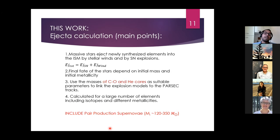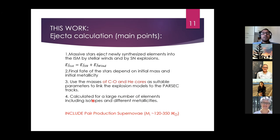I will give a broad overview of how we compute the ejecta. The total ejecta is the summation of ejecta from the supernova plus ejecta from stellar winds. The final fate of stars depends on initial mass and initial metallicity. We use the mass of the carbon-oxygen core and helium cores from PARSEC stellar evolution tracks, linking them with existing explosive models in the literature. Doing so, we calculate yields for a large number of elements, including isotopes, for the different metallicities. Importantly, this includes pair instability supernova yields for non-zero metallicities for the first time.